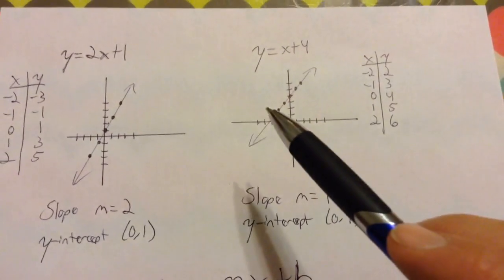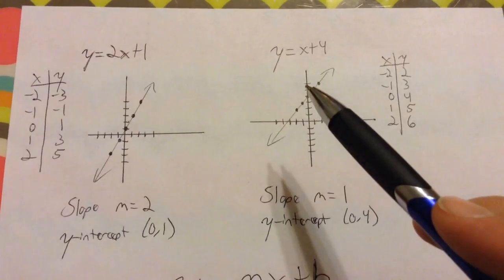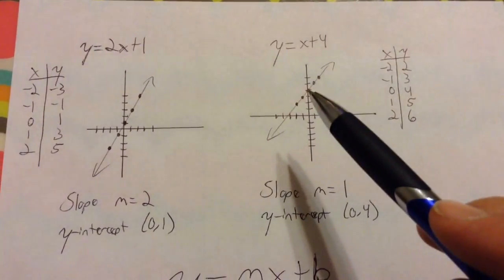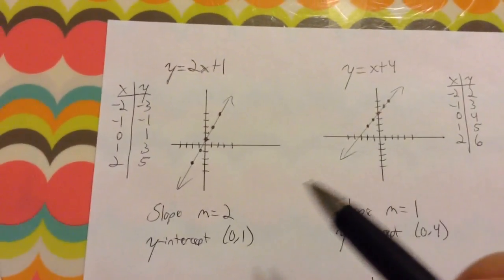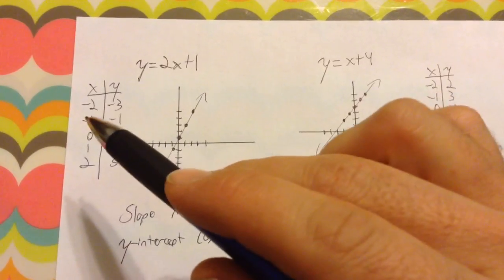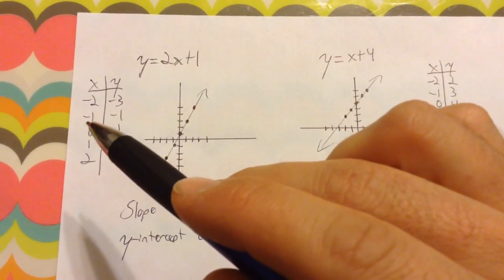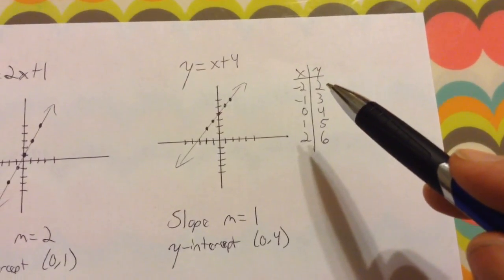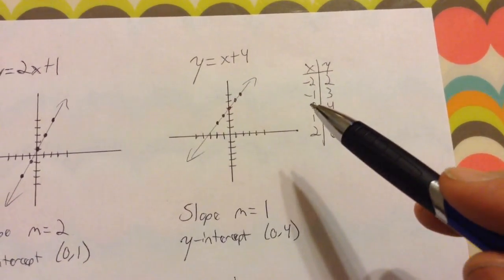Same thing for y equals x plus 4. This one is going up 1 over 1 each time, so our slope is 1 and our y-intercept is 4, which we found in the table. You should also notice the slope if you look at the table — up 2 over 1 for the first equation, and up 1 over 1 for this one.